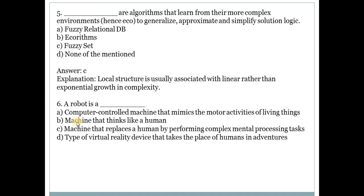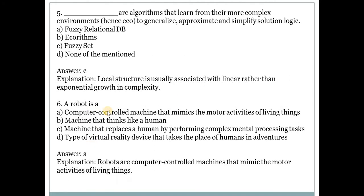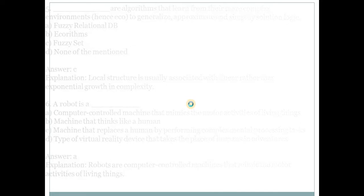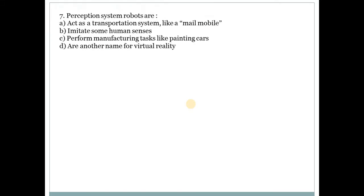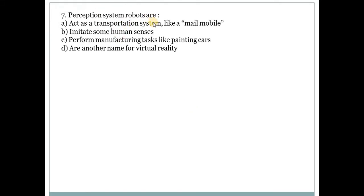Sixth question: What is a robot? Robots are computer controlled machines that mimic the motor activities of living things. Next question: Perception system robots are robots which imitate some human senses.